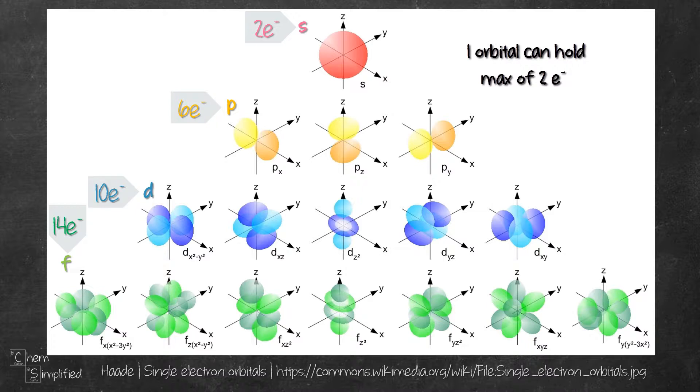The way we come up with two, six, ten and fourteen electrons is we take the number of orbitals, multiply by two electrons because that's what each orbital can hold. So for example, for S, we only have one orbital, right? So we have one times two, we get two electrons.